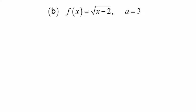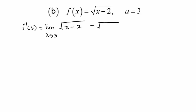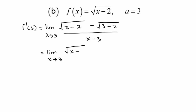Now let's do question B. I am going to find f'(3) because our a is 3. This equals the limit as x approaches 3 of f(x), which is √(x minus 2), minus f(3) which is √(3 minus 2), which equals 1, divided by x minus 3.